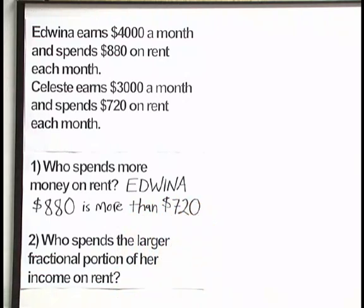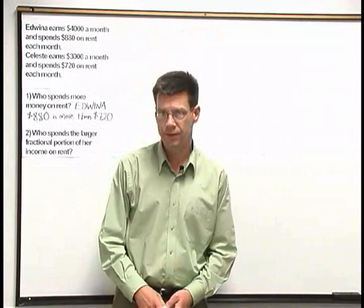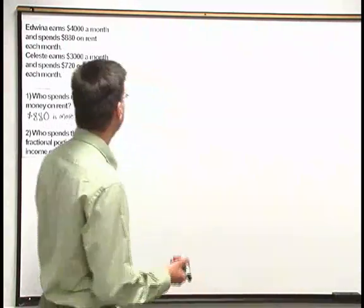The second question — who spends the larger fractional portion of her income on rent — is quite a bit more complicated. That's not so obvious and not so easy to answer. We're going to have to set up fractions, reduce them, and compare them in order to decide who spends the larger fractional portion on rent. So let's go ahead and calculate the fraction of Edwina's income that she spends on rent.